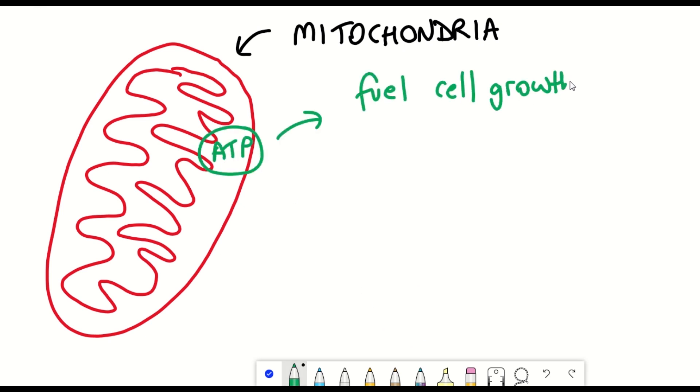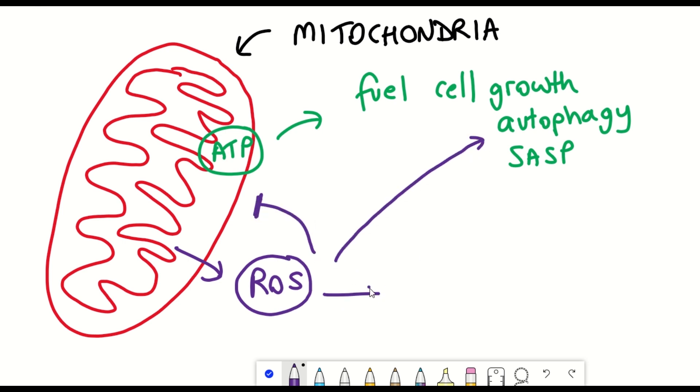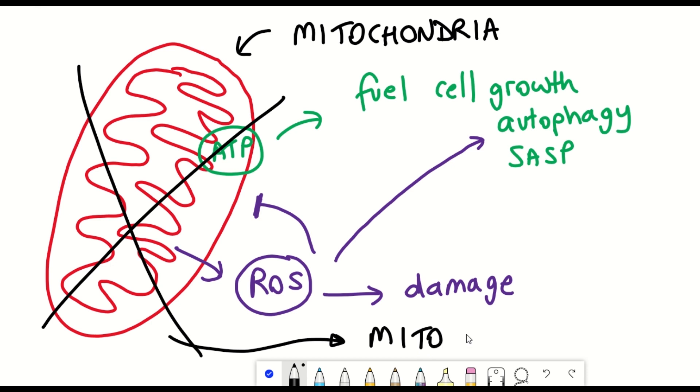However, in addition to the production of ATP, mitochondria also produce these reactive oxygen species that we've already spoken about. And so this can increase the amount of protein damage and therefore requires the cell to depend more on energetic processes such as autophagy that just fuels this increase further in reactive oxygen species.